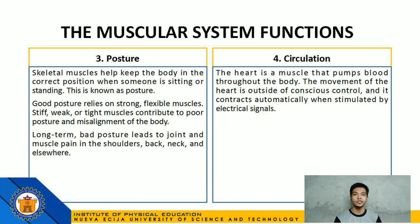Number 3: Posture — skeletal muscles help keep the body in the correct position when someone is sitting or standing. Good posture relies on strong, flexible muscles. Stiff, weak, or tight muscles contribute to poor posture and misalignment of the body. Long-term bad posture leads to joint and muscle pain in the shoulders, back, neck, and elsewhere.